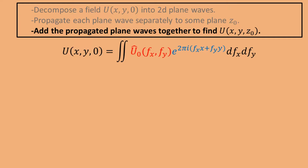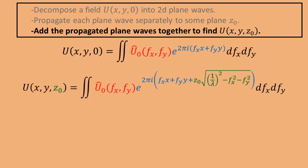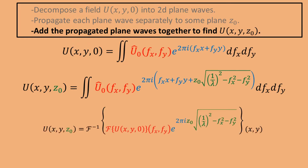Now that we've found how each plane wave propagates, we can add all the propagated plane waves together to find the total propagated field. The initial field was decomposed into two-dimensional plane waves with spatial frequencies fx and fy, each with a weight û₀ which is the angular spectrum found by Fourier transforming the field. To propagate the field to another plane z₀, we include an extra phase term, which is essentially the kz component of a wave vector k with length 2π/lambda. We can write this expression using Fourier transforms: we Fourier transform the initial field to decompose it into plane waves, multiply the spectrum with the phase term, and then inverse Fourier transform the product to add all the waves together.